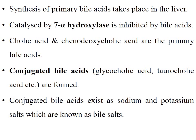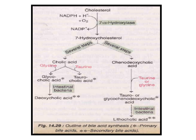Synthesis of primary bile acids takes place in the liver, catalyzed by 7-alpha-hydroxylase, which is inhibited by bile acids. Cholic acid and chenodeoxycholic acid are the primary bile acids. Conjugated bile acids such as glycocholic acid, taurocholic acid, etc. are formed. Conjugated bile acids exist as sodium and potassium salts, known as bile salts.